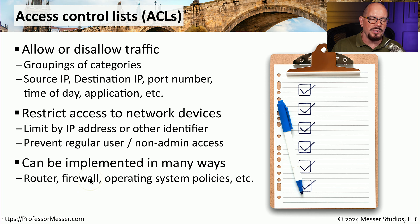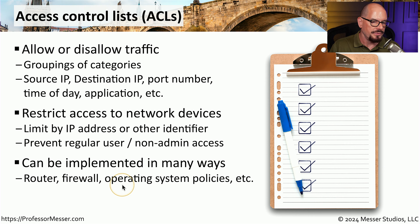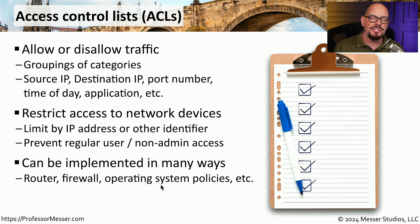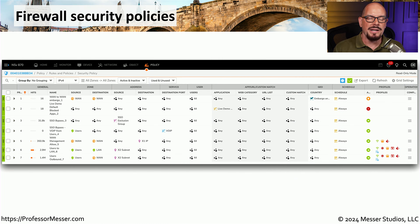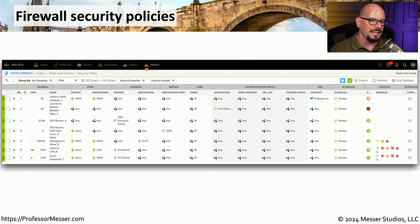Access control lists can be found on many different devices, including routers, firewalls, operating systems, and anything that needs to make a decision about access. The security policies we often see in a firewall are a very complex form of an access control list.